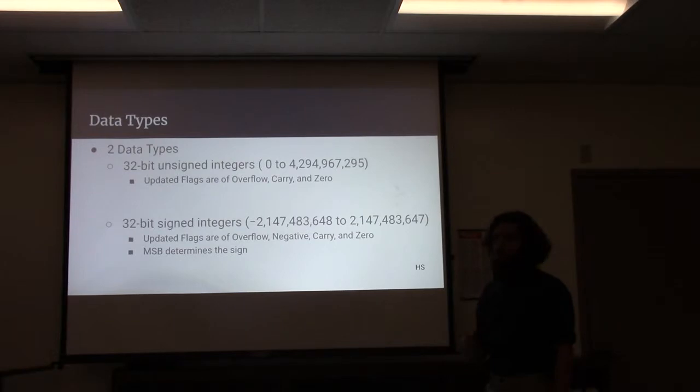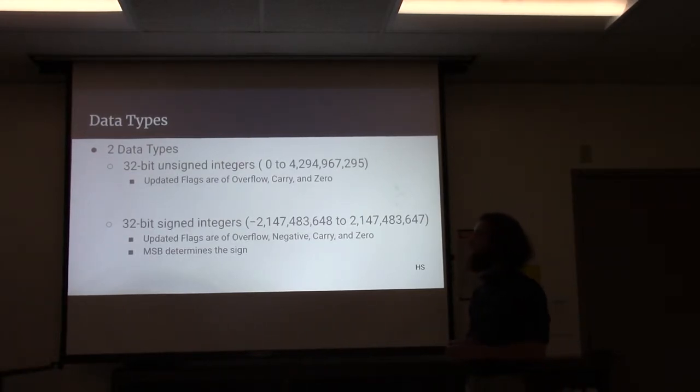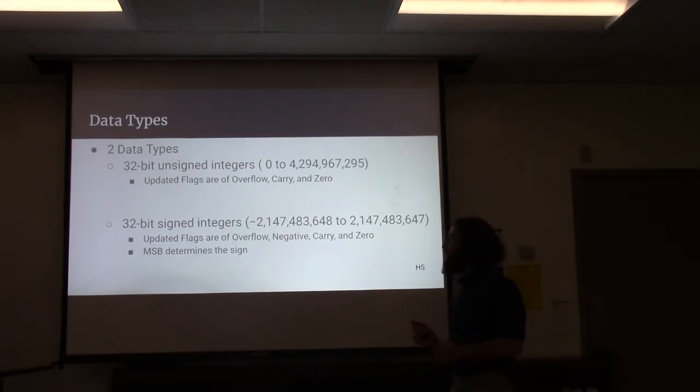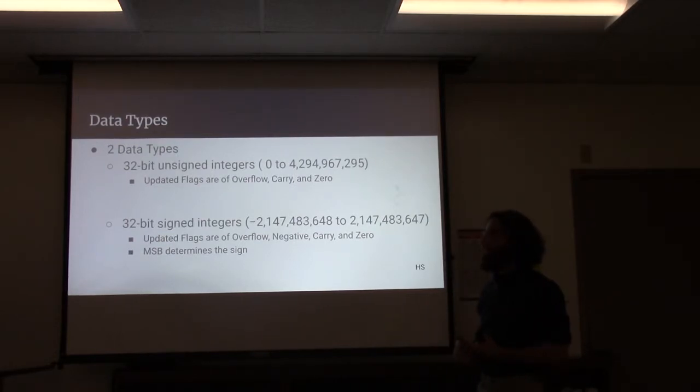Our SNF processor has two data types. They are the 32-bit unsigned and signed integers. The 32-bit unsigned integers range between 0 to approximately 4 million. And the updated flags for this data type are overflow, carry, and zero.